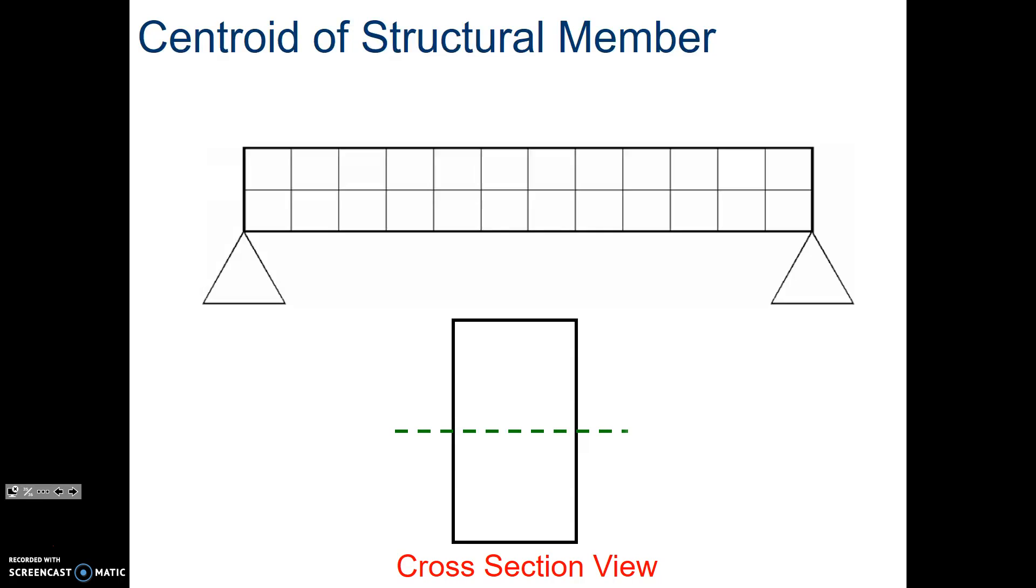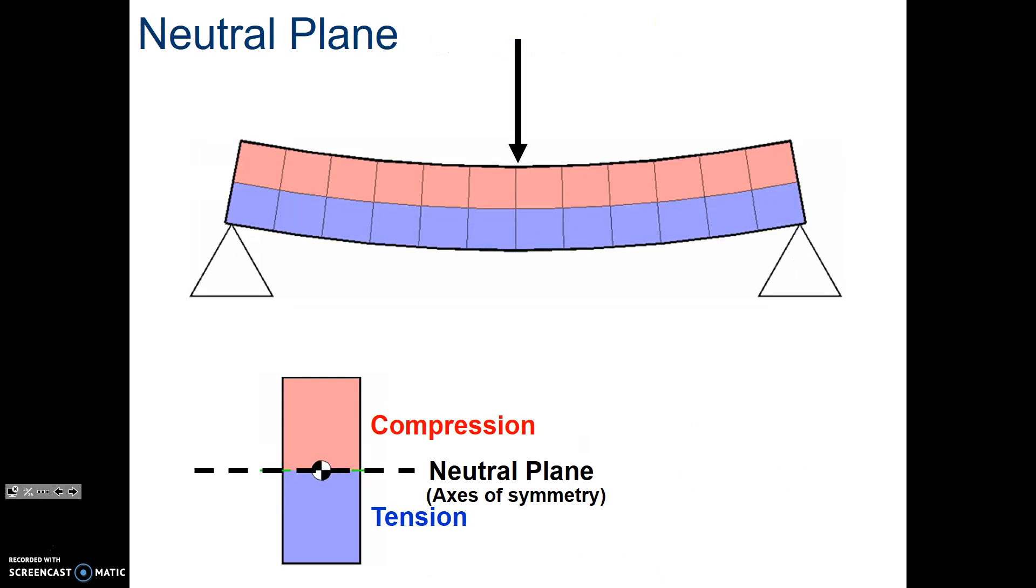Now, we're going to end with looking at that cross-sectional area. And what happens if we start pushing on it? It's going to start bending. You're going to start getting tension and compression. And that's where we'll end today. Thank you and have a great day.